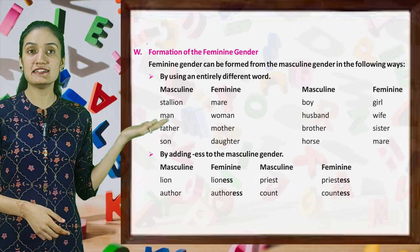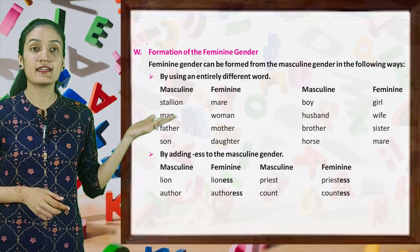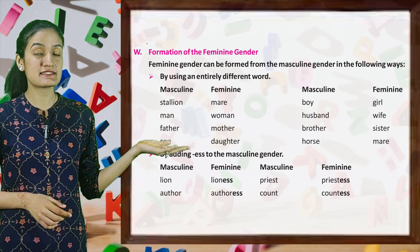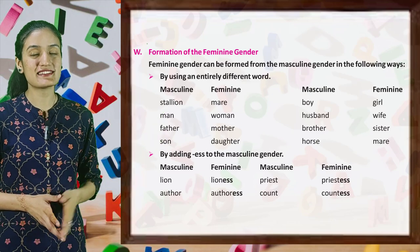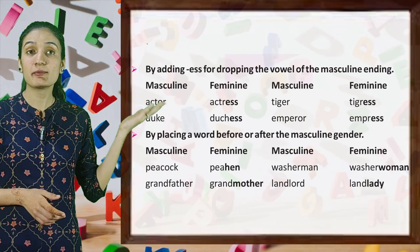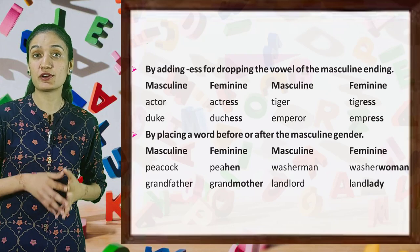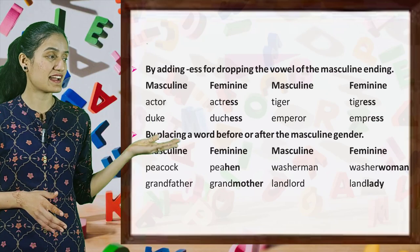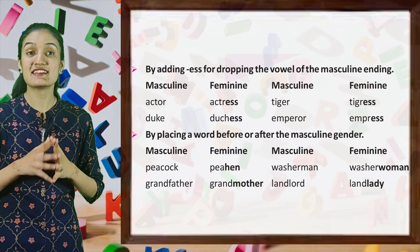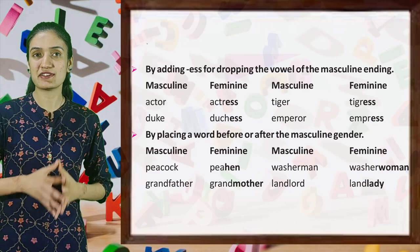By adding -ess to the masculine gender: lion → lioness, priest → priestess, author → authoress, count → countess. By adding -ess and dropping the vowel of the masculine ending: actor → actress, tiger → tigress, duke → duchess, emperor → empress.